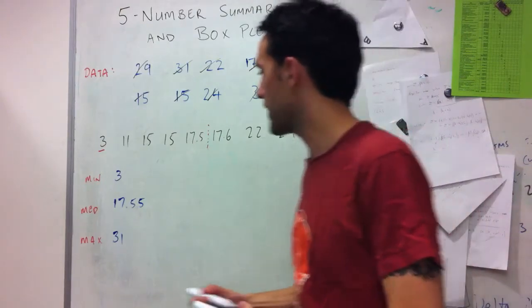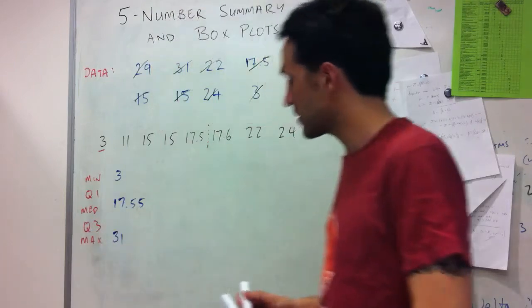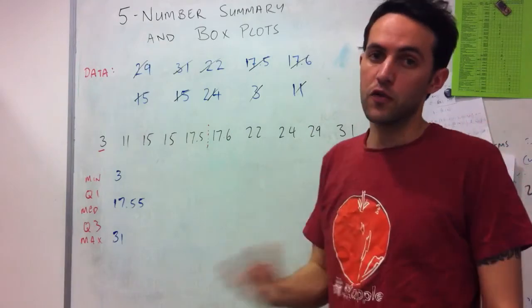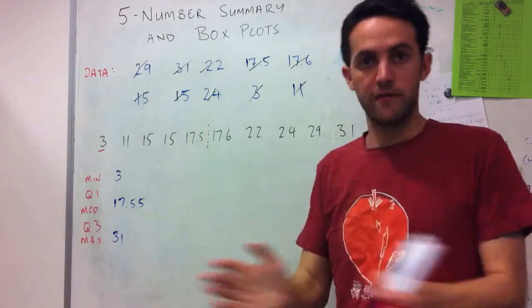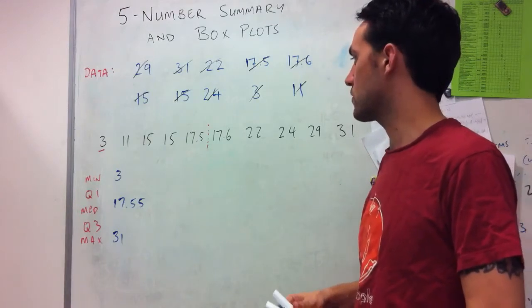I then need to calculate my quartiles, my Q1 and my Q3. So where, as the median breaks the data in half, the quartiles break it in half again, so that we get 4 equal quarters, quadrants.